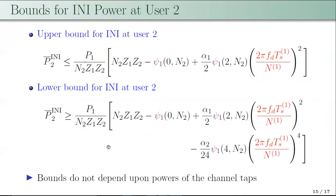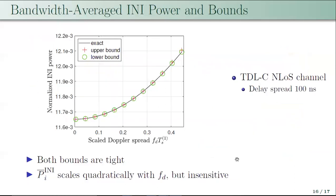The bounds for user 2 do not depend upon the powers of the channel taps, unlike those for user 1. The bandwidth-averaged INI power at user 1 is plotted along with its bounds as a function of scaled Doppler spread, with INI power normalized with respect to the power per subcarrier. The black line shows the exact INI power, the green marker shows the lower bound, and the red marker shows the upper bound. The upper and lower bounds are very tight, confirming the quadratic dependence on Doppler spread. The normalized INI power varies from 11.6×10⁻³ to 12.1×10⁻³, showing it is relatively insensitive to Doppler spread.